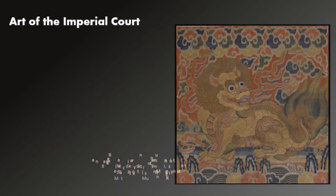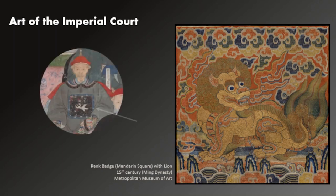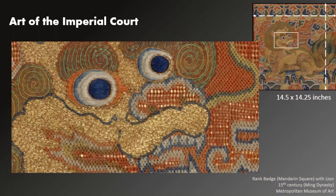One official product for which the imperial workshops were responsible were badges like this one, which were sewn to the front of one's robes to indicate rank — as we see in a detail from the ancestor portrait we looked at a moment ago. Birds were used to denote the rank of officials in the civil service, whereas land animals, like the lion shown here, were used for the military — the lion being the highest rank. This badge is only 14 by 14 inches, but look at how incredibly precise and meticulous the embroidery is. Just in a small section of perhaps three inches, there's absolutely gorgeous and precise stitching of gold thread to make up the body of the lion, with at least four different kinds of embroidery stitches used.